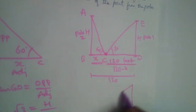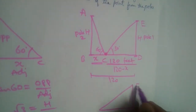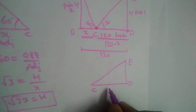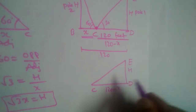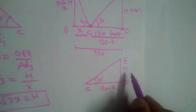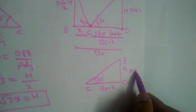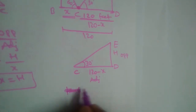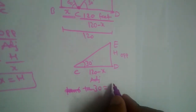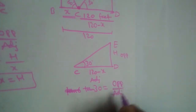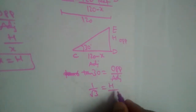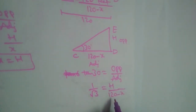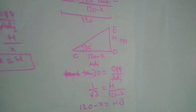Now let us take the other triangle EDC. This has base 120 minus X, height H, and angle 30 degrees at C. To angle 30°, ED is the opposite side and CD is the adjacent side, so opposite over adjacent gives tan. Therefore tan 30° equals H divided by (120 minus X). Since tan 30° is 1/√3, cross-multiplying gives 120 minus X equals H√3.